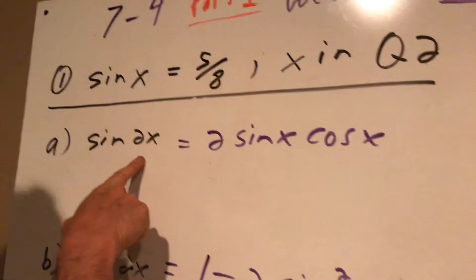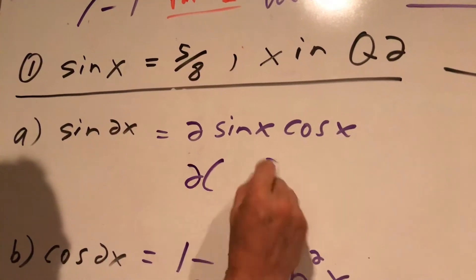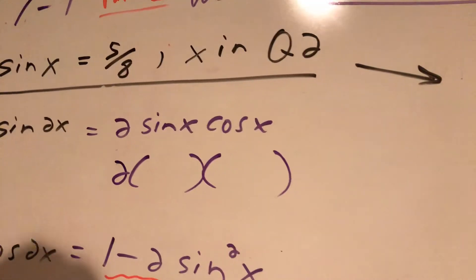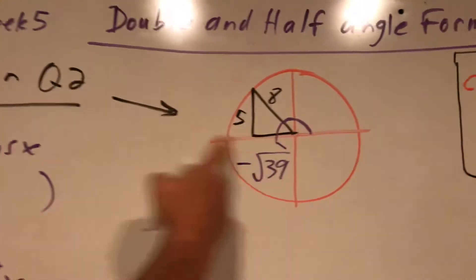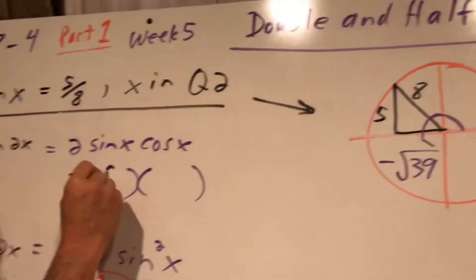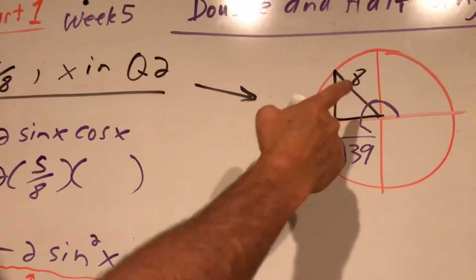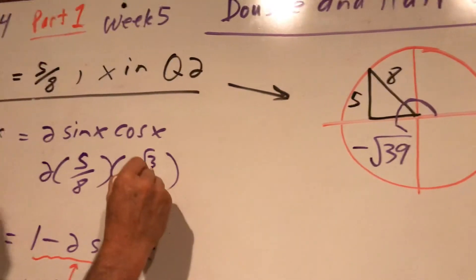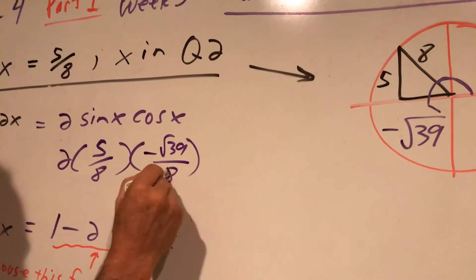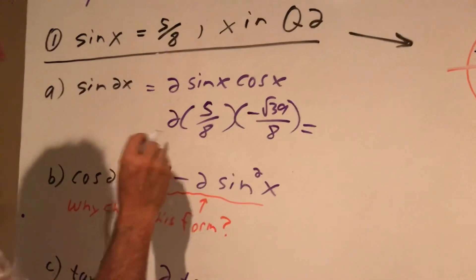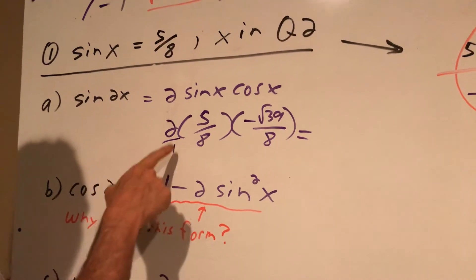So sine of 2 times the angle is gonna be 2 times sine of x times cosine of x. Sine of x, they told me, was 5 over 8, but it's opposite over hypotenuse. Cosine of x is going to be adjacent over hypotenuse, negative root 39 over 8. I'll keep all my things together here. This is 2 over 1, 2 times 5 is 10.